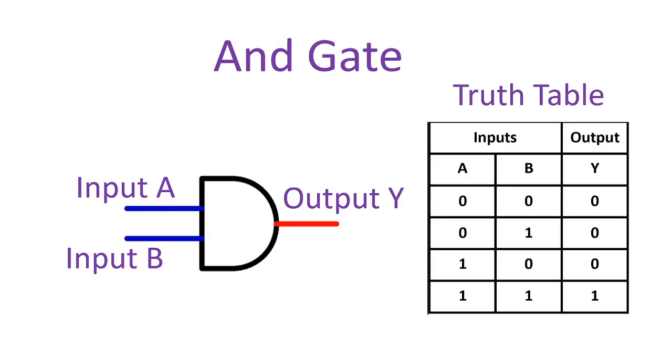If we are going to look here at the truth table, input A is 0, input B is 0, output is 0. Input A is 0, input B is 1, output is 0.